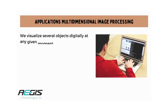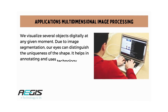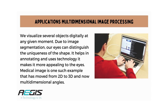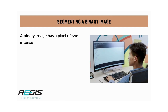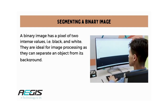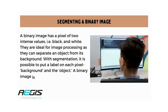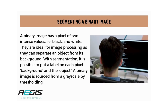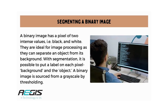Now let's understand the applications of multidimensional image processing. We visualize several objects digitally at any given moment. Due to image segmentation, our eyes can distinguish the uniqueness of shape. It helps in annotating and uses technology to make it more appealing. Medical imaging is one such example that has moved from 2D to 3D and now multidimensional angles. Next is segmenting a binary image. A binary image has pixels of two intensity values, i.e. black and white.